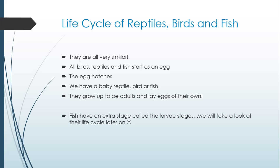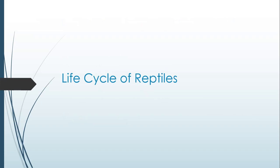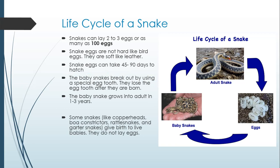For your check-in on Thursday, you might need to know that. So, we're going to start going through the life cycle of reptiles. We're starting with a snake. Snakes can lay up to two or three eggs, or up to 100 — it depends on what type of snake it is.